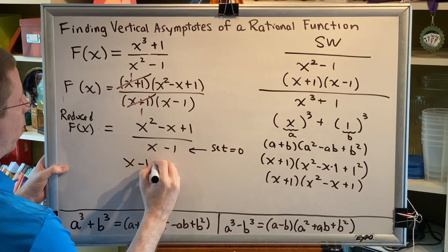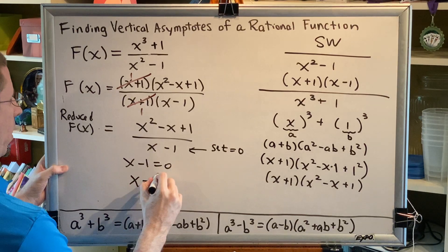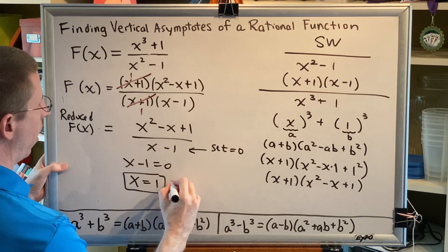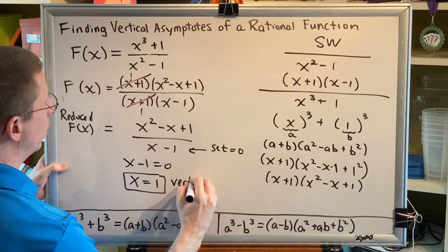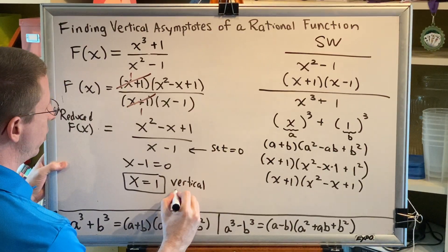So, I get x minus 1 equals 0. And by adding 1 on both sides, I get x equals 1. This is the equation of the vertical asymptote. It's not just the value of x. It's also an equation form.